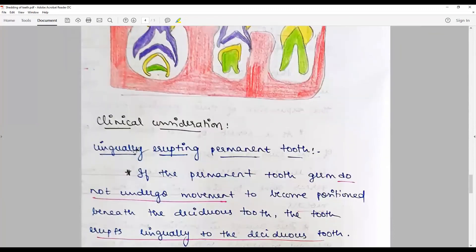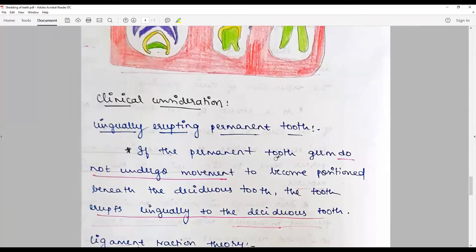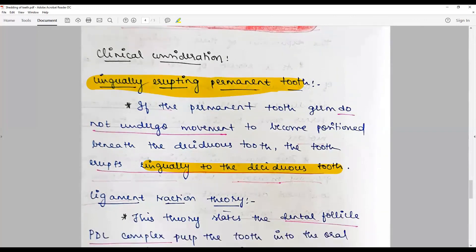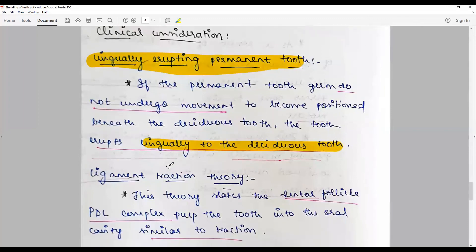Clinical consideration: lingually erupting permanent teeth. If the permanent tooth germ does not undergo movement to become positioned beneath the deciduous tooth, the tooth erupts lingually to the deciduous tooth. This is the most important factor. For molars, it is usually lingually erupting permanent teeth.